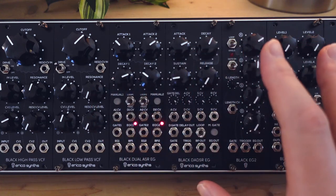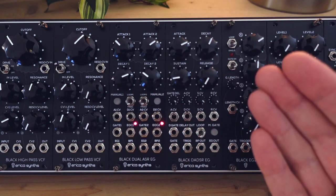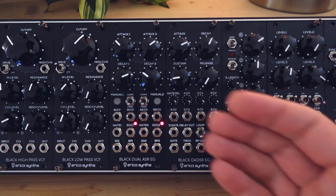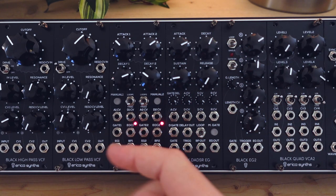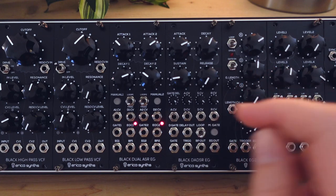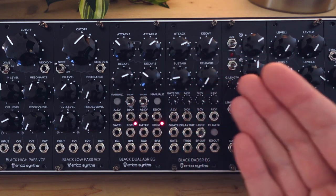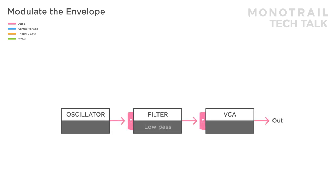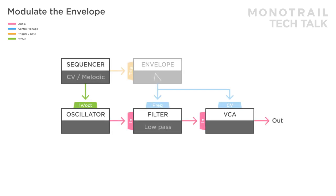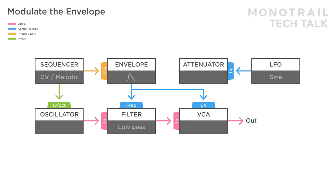In most cases you will see CV inputs for different stages of the envelope. For example, this one has a CV input for the attack and decay stage. Being able to modulate your envelopes opens up a world of possibilities. Here you see a basic synth voice with a sequencer triggering an attack decay envelope, modulating both the filter and VCA. In this setup a sine wave LFO is sent to an attenuator, and then on to modulate the decay stage of the envelope.